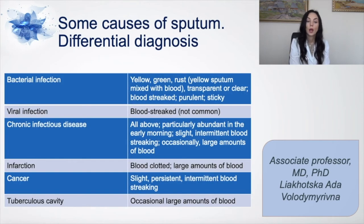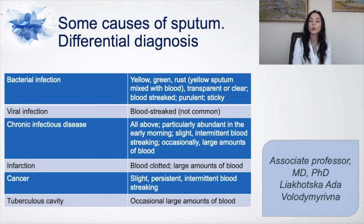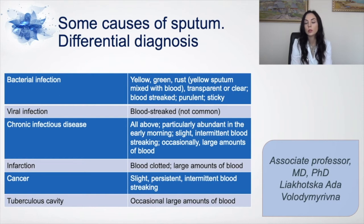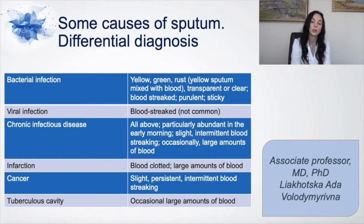Some causes of sputum: color and characteristics of sputum play a huge role. During bacterial infection you could see yellow, green, rust, clear or transparent, purulent, blood-streaked, and sticky sputum. In viral infection it could be blood-streaked but not common. Chronic infectious disease produces all of the above and is particularly abundant in the early morning, with slight intermittent blood-streaking or occasionally large amounts of blood. In cancer you could see slight persistent intermittent blood-streaking. During infarction it could be blood-clotted with large amounts of blood. You could also see these signs during tuberculosis cavity.